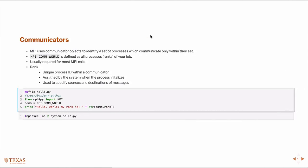MPI uses communicators — this is how you identify the sets of processes which communicate only within their set. MPI_COMM_WORLD is defined as all processes and ranks for your job, and this is the one you'll almost always call. When you start every MPI program, you'll almost always see this call to MPI_COMM_WORLD. Ranks are just IDs for a communicator. So if you have four processors, you'll have ranks zero, one, two, three. If you have two processors, you'll have ranks zero and one. They're assigned by the system at initialization and are just a way to specify where you're sending and receiving information.